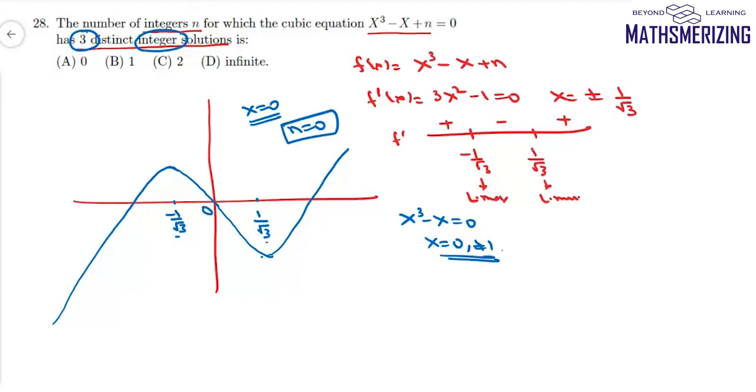So the number of distinct integral values of n is simply 1. This equation will have three distinct integral solutions only when the value of n is 0, which is your option number B.